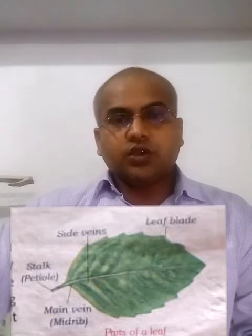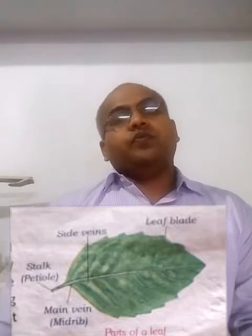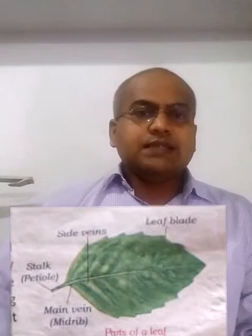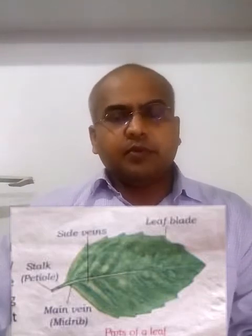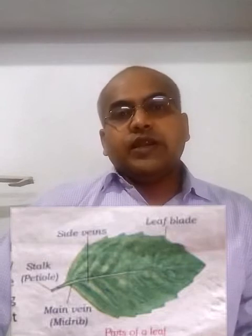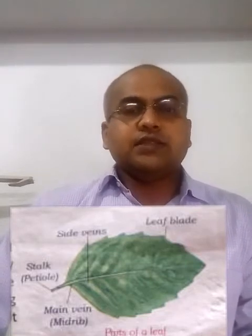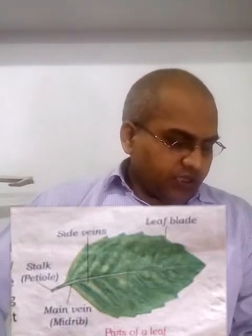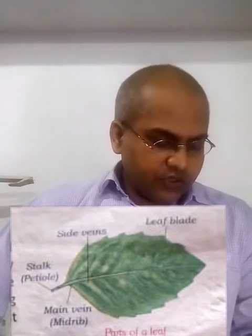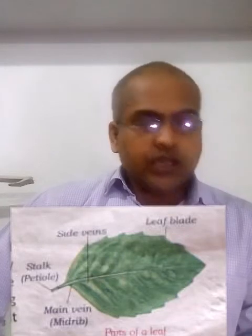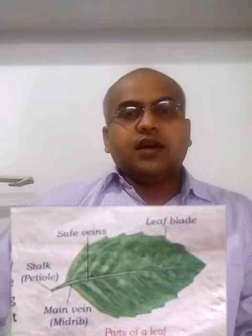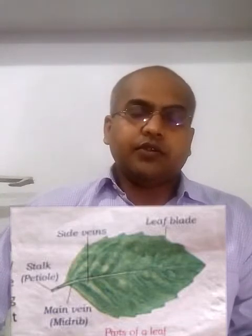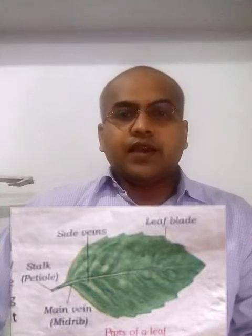Now come the objective questions of this chapter. First is question A — choose the correct answer. The first question is: the leaf is attached to the stem by the answer, which will be stalk or petiole. With the help of a stalk or petiole, the leaf is attached to the stem.